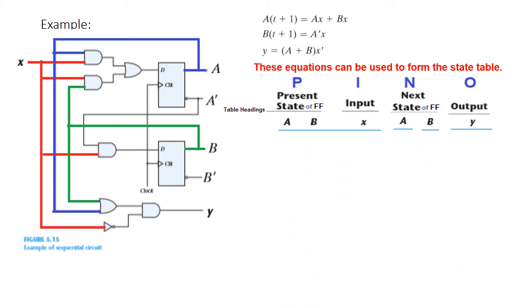The state table headings are: present state (A and B, since there are two flip flops), input X, next state (A and B), and output Y. To help remember these columns: P, I, N, O — Present, Input, Next, Output.